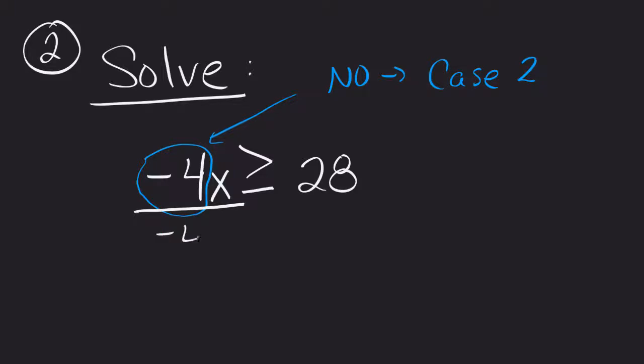We divide by the negative 4. We divide by the negative 4. Same rule, same property. You still reduce. So it leaves me x. What happens here?